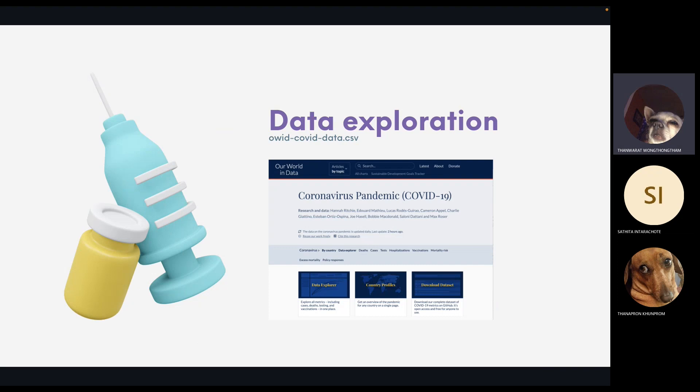In data exploration, we start by looking around the dataset. The dataset contains the data on each day for each country from 2019 until the beginning of this year. The main data types are object and code number, and the data columns represent the set of information.